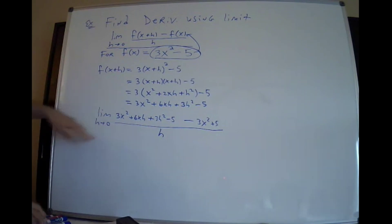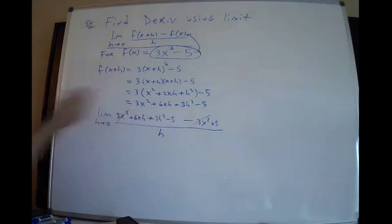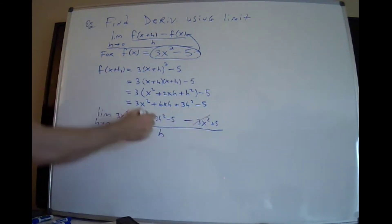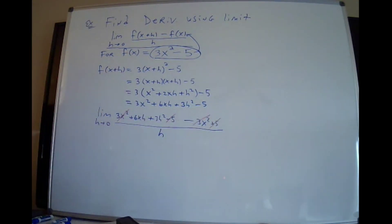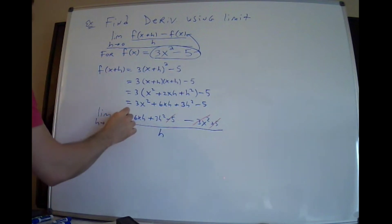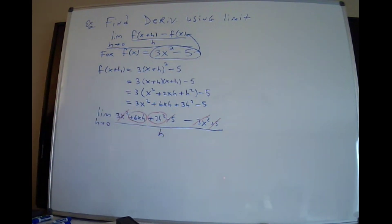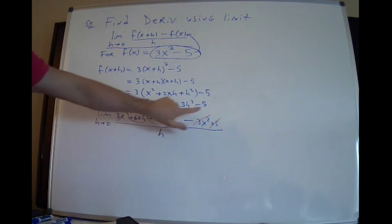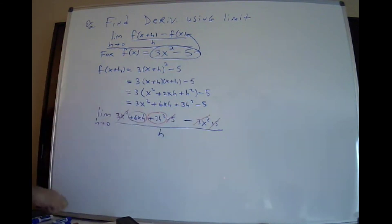It saves me having to write the whole thing over again. Now you have a 3x² and a minus 3x² — they cross out. You have a negative 5 and a plus 5 — they cross out. Who's left? Just these two terms. Everybody else crossed out — gone, gone, gone, gone. You're only left with that.